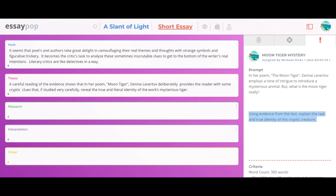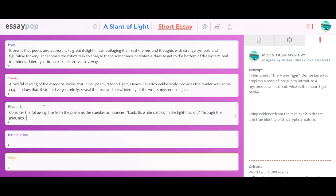Once the hook and the thesis have been established, you can then move on to providing some sort of proof to prove your point or your argument. That is what the research frame is for. Remember, in this essay it's asking me to use evidence from the text to explain the true identity of the moon tiger.